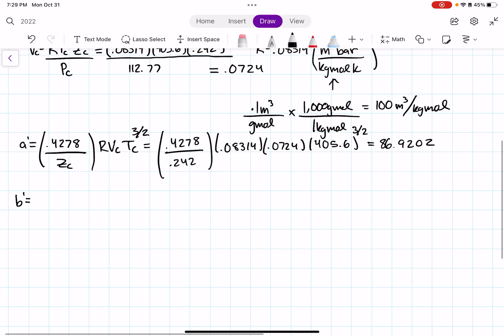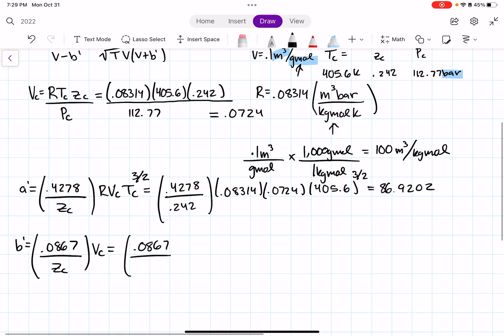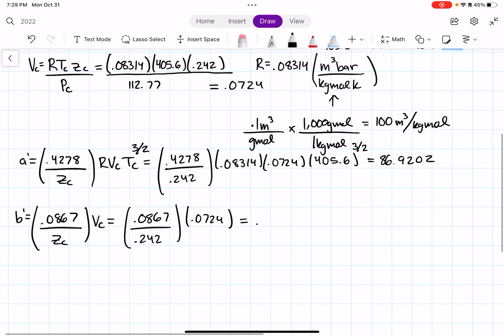Now I'm going to go ahead and calculate B prime. B prime formula is the following. Now I'll just, again, plug things in. My ZC is 0.242, my VC is 0.0724. After plugging that into a calculator, we get 0.0259.